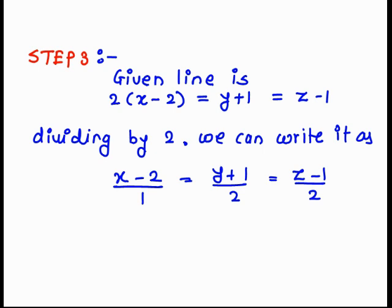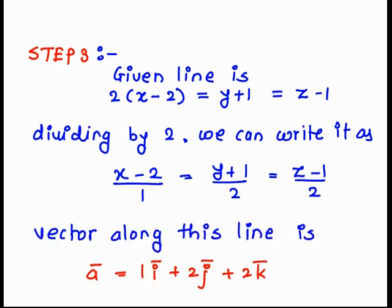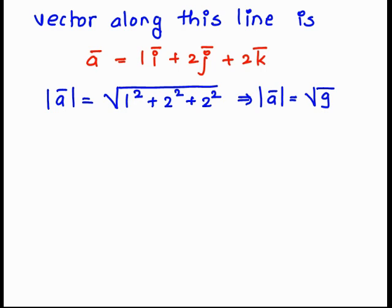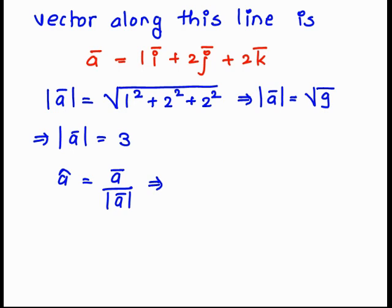From the DRS, we get the vector of the line. The vector along the line is ā = 1i + 2j + 2k. These three values are the DRS of the line. Next, we find â. To do so, we calculate the modulus of ā: |ā| = √(1² + 2² + 2²) = √9 = 3. Therefore, â = ā / |ā| = (1/3)(1i + 2j + 2k).